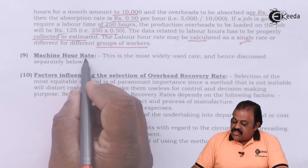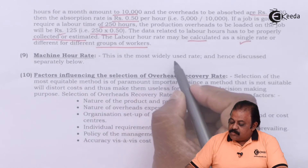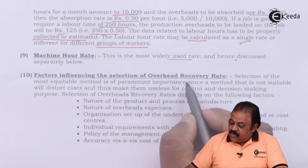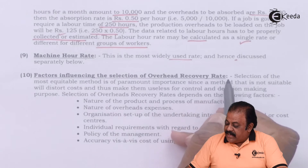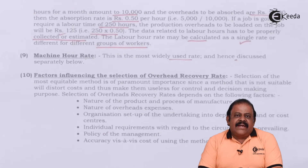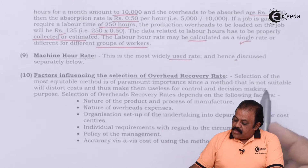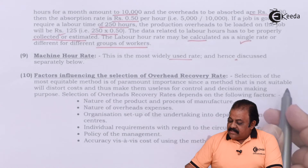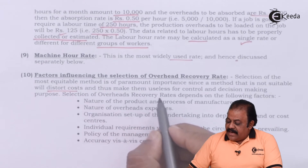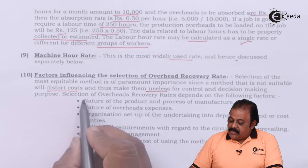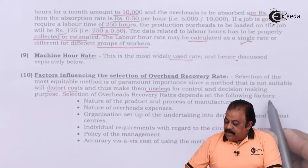The next method is machine hour rate, which is the most widely used rate and is discussed separately. There are many factors which organizations use to decide overhead distribution. Selection of the most equitable method is of paramount importance, since an unsuitable method will distort the cost and make it useless for control and decision-making purposes.